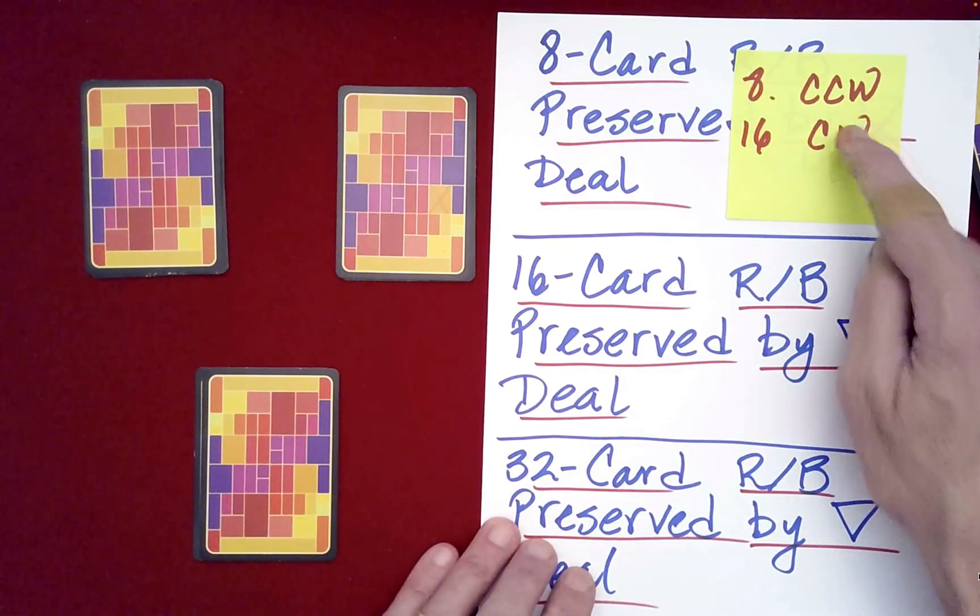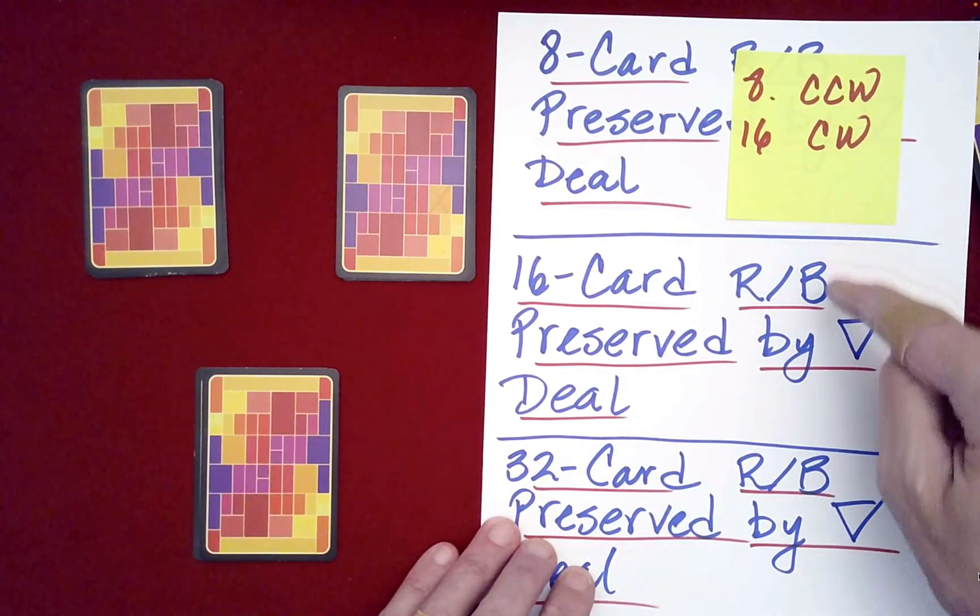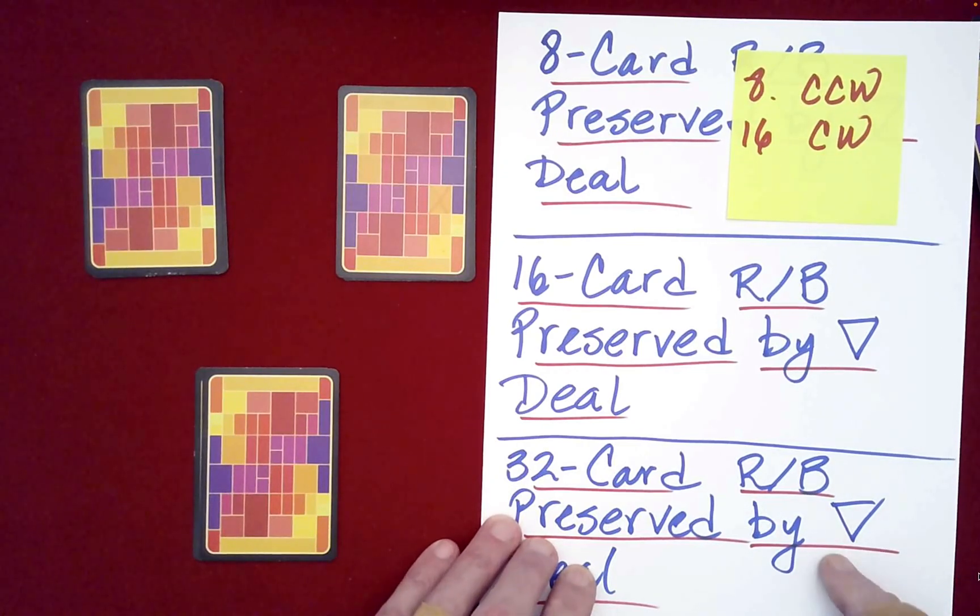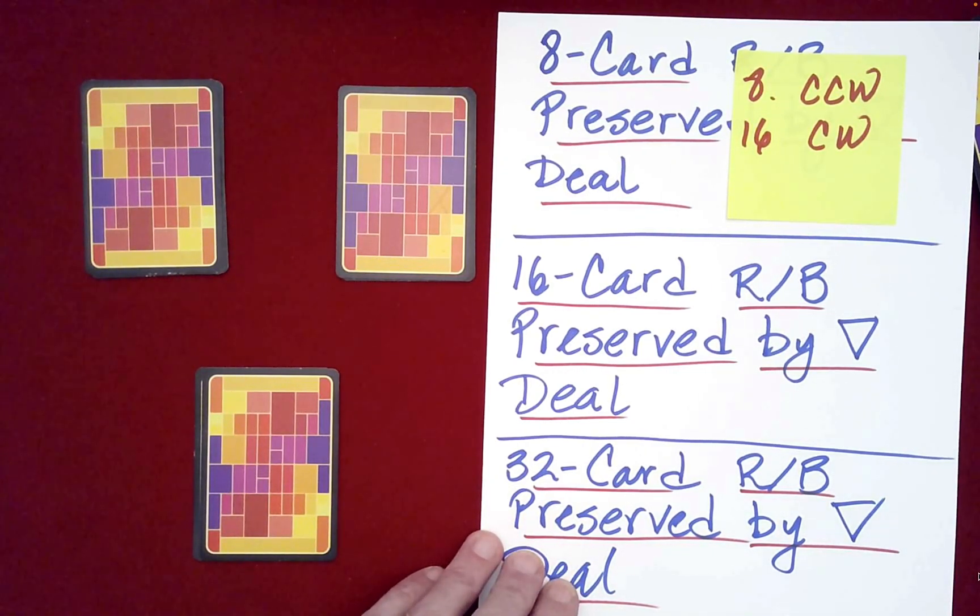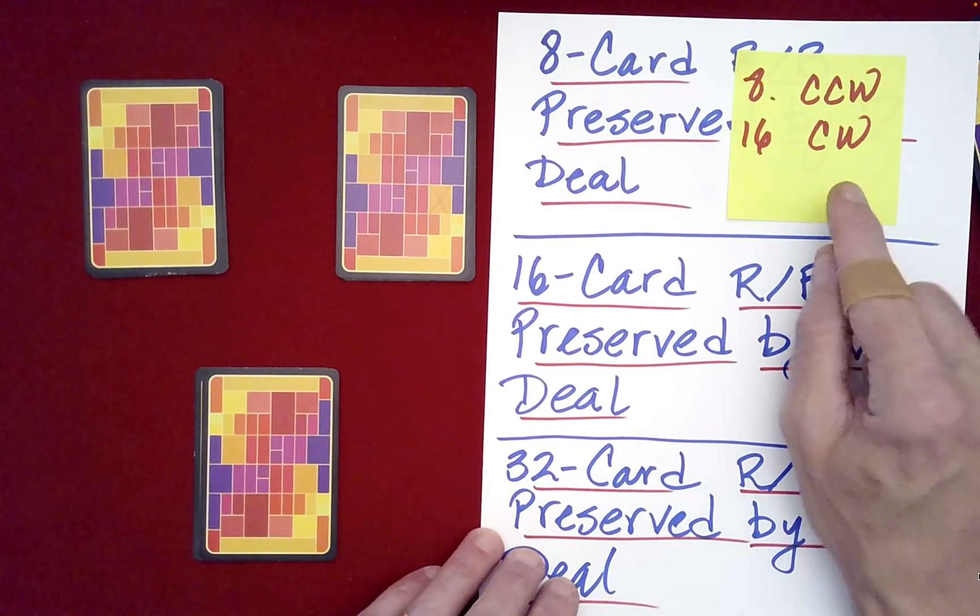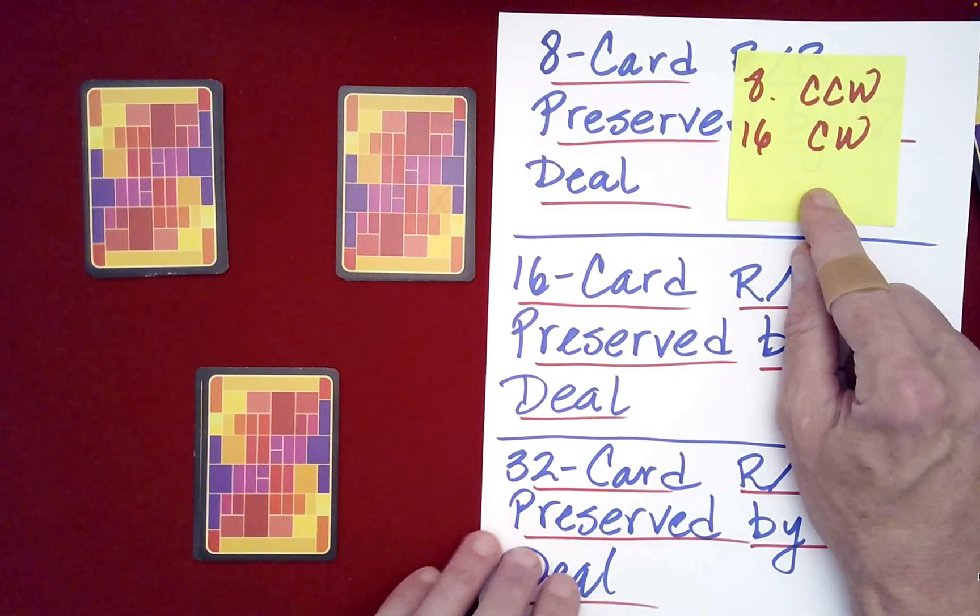Okay, and then as you might imagine, this pattern just alternates. Like here, you'd go back to counterclockwise for the picking up, and then 64 clockwise, and so forth. Okay, so that's the only subtlety to be aware of.